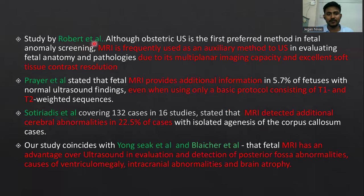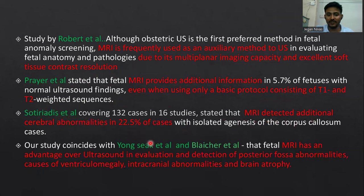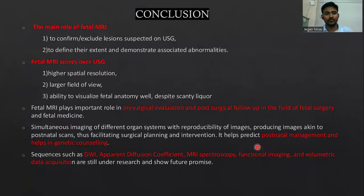The study done by Robert et al. showed that MRI frequently serves as an auxiliary method to ultrasound due to its multi-planar imaging capacity and excellence of tissue resolution. A prior study stated that MRI provides additional information even when using only basic protocols consisting of T1 and T2 images. A study done by Sotiriadis also showed that MRI detected additional cerebral abnormalities in 22.5% of cases with isolated agenesis of corpus callosum. This also coincides with studies done by Young, Sequel, and Blacher et al.